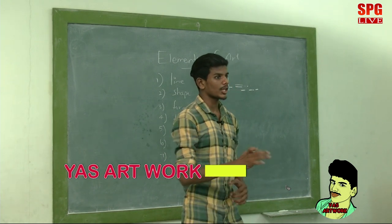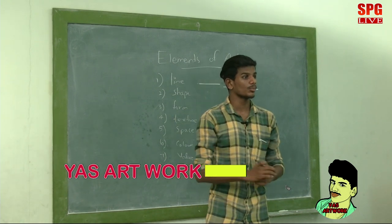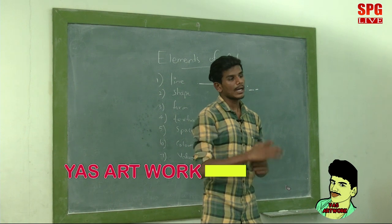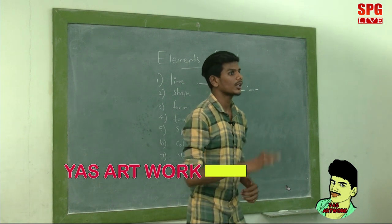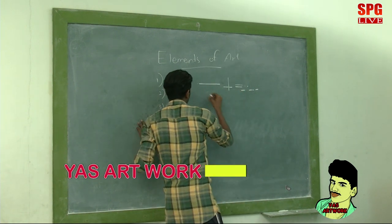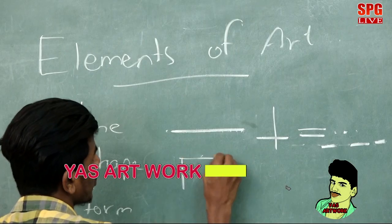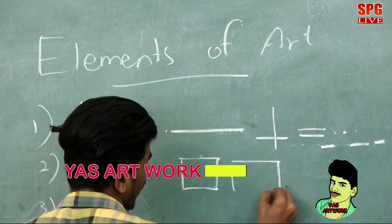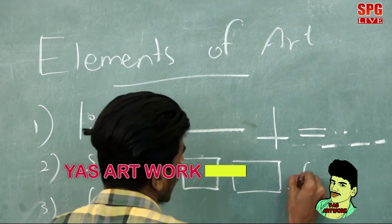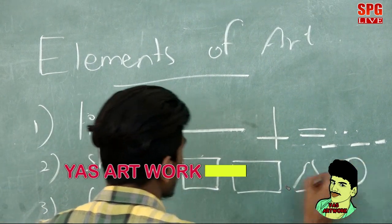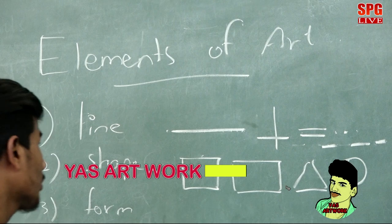The next thing we're going to talk about is shape. Shape is arranged using two-dimensional lines. Examples of shapes are square, rectangle, triangle, and circle.